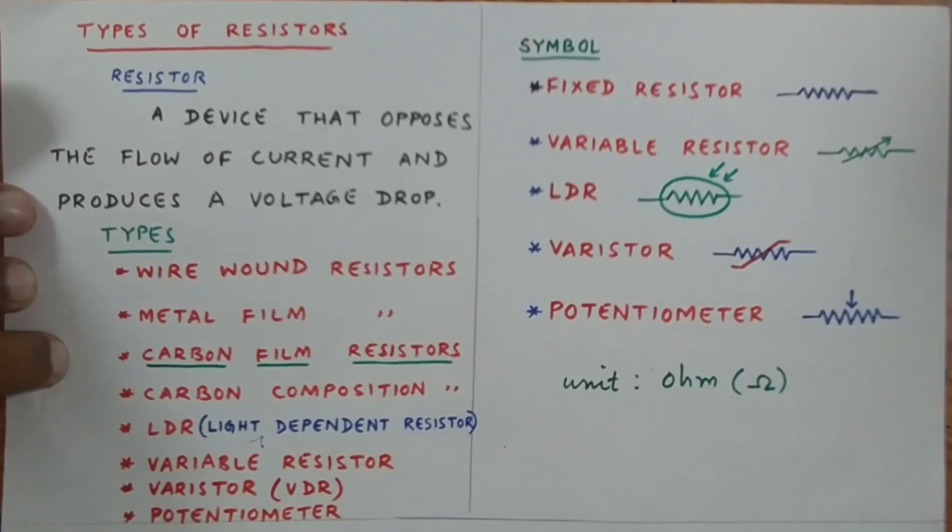Next we have varistor or VDR. This one is a VDR or varistor. It is used to reduce voltage and is usually used in LED bulbs.